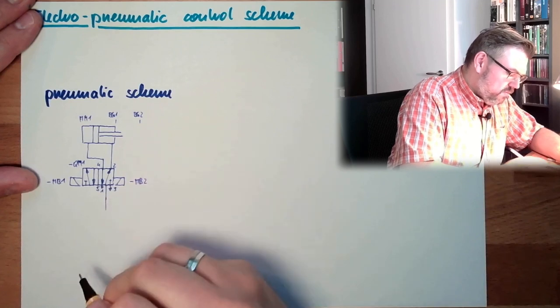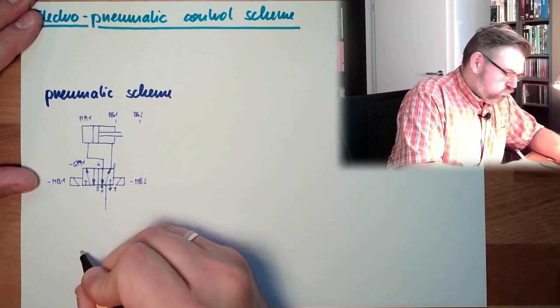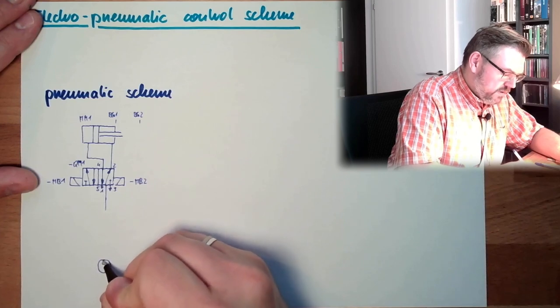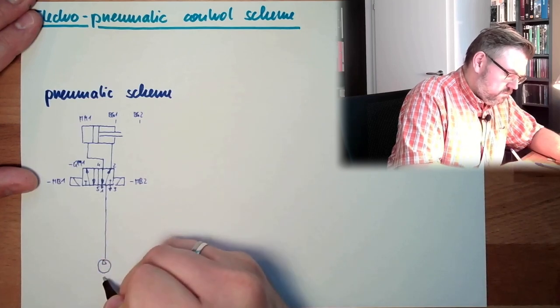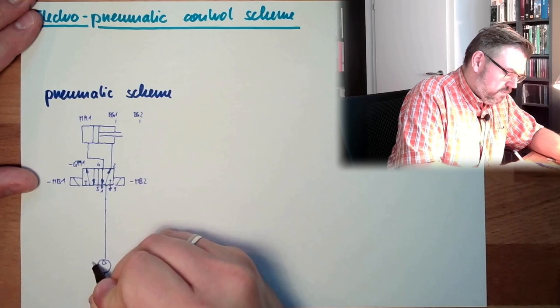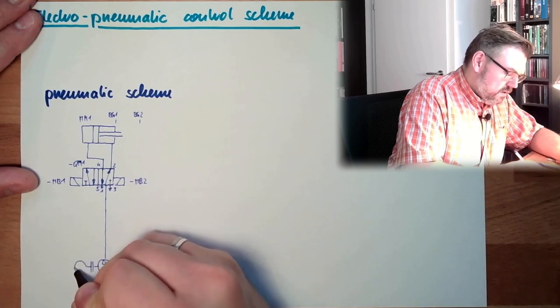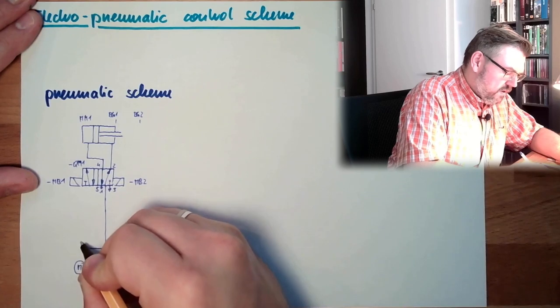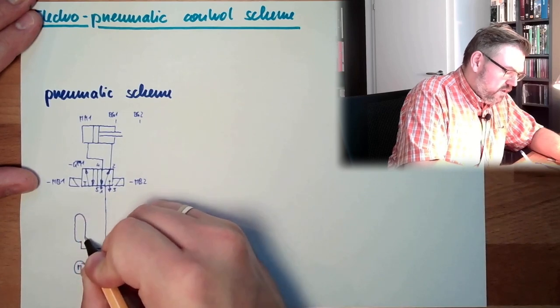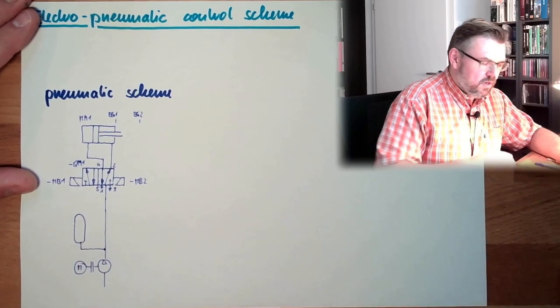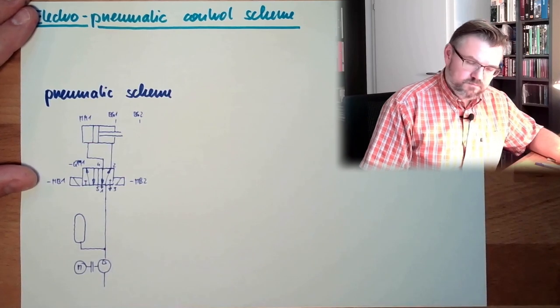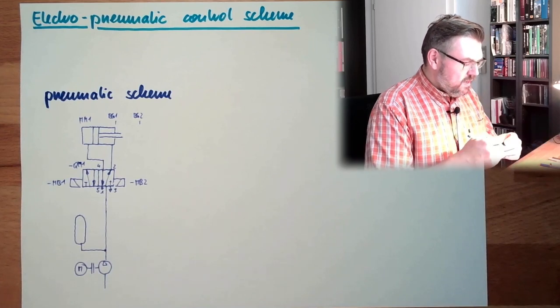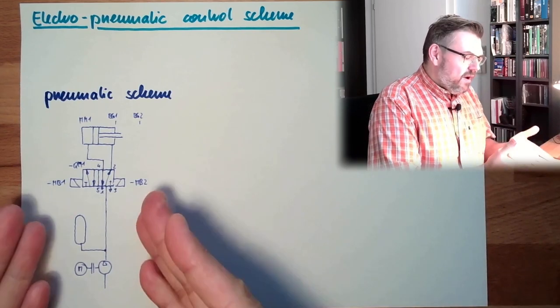And then at the bottom I have somewhere a power supply part. So there might be compressor, operated by a motor, then I might have some pressure accumulator. Pneumatic scheme. Did this in previous videos.